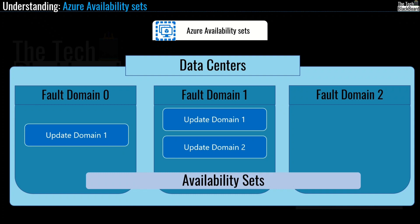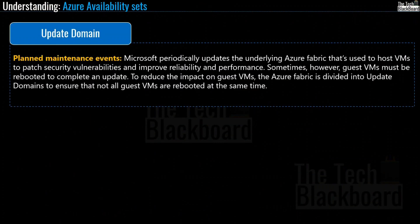You might be wondering what update domains and fault domains are. Microsoft periodically updates the underlying Azure fabric that hosts virtual machines to patch security vulnerabilities and improve reliability and performance. These updates, referred to as planned maintenance events, are often performed without any impact to guest virtual machines. However, sometimes guest virtual machines must be rebooted to complete an update. To reduce the impact, the Azure fabric is divided into update domains to ensure that not all guest virtual machines are rebooted at the same time.